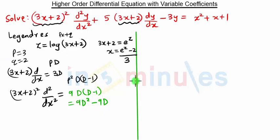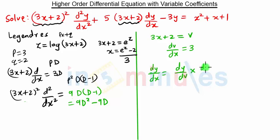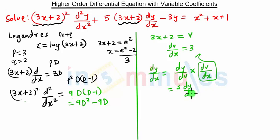Some of you might think how we got such substitutions — why we have to substitute (3x plus 2) squared times d squared by dx squared as 9d(d minus 1). For that, let's substitute 3x plus 2 equal to some another variable v. Then if we take the derivative of v with respect to x we get dv by dx as 3. Then dy by dx will be dy by dv times dv by dx. Substituting dv by dx as 3 we get dy by dx as 3 dy by dv.